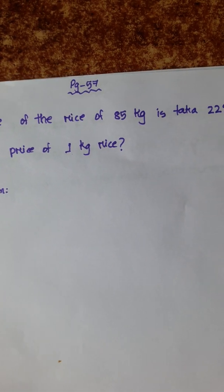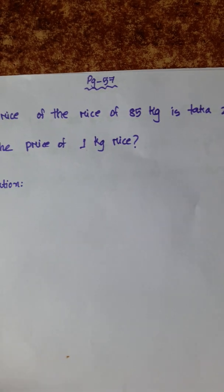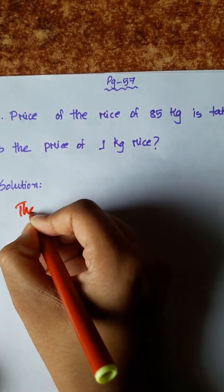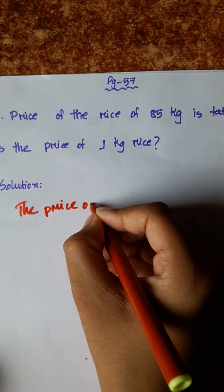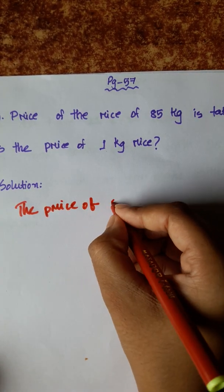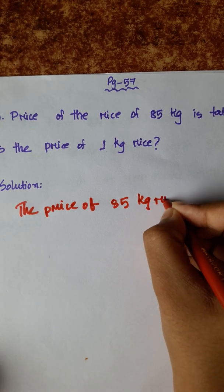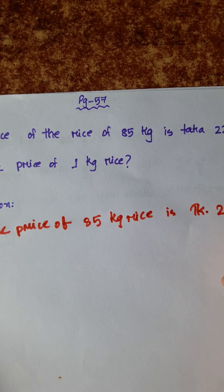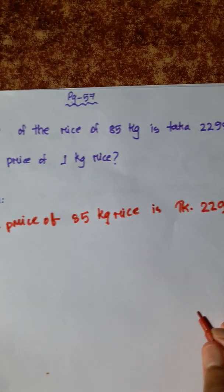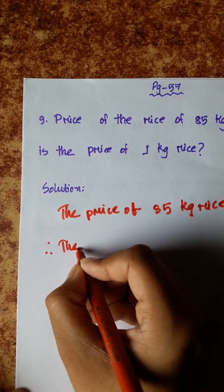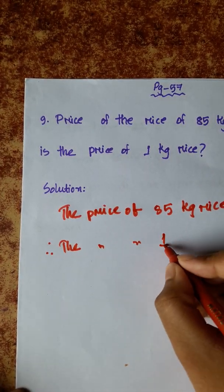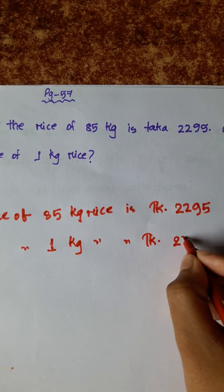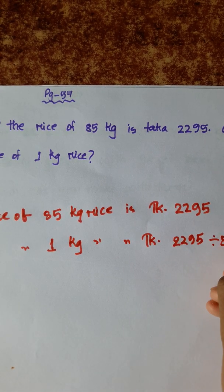Price of 85 kg of rice is Taka 2295. What is the price of 1 kg of rice? The price of 85 kg rice is Taka 2295. Therefore, the price of 1 kg rice is Taka 2295 divided by 85.